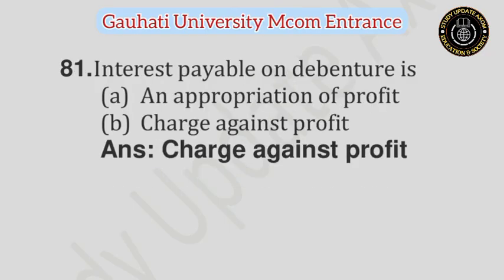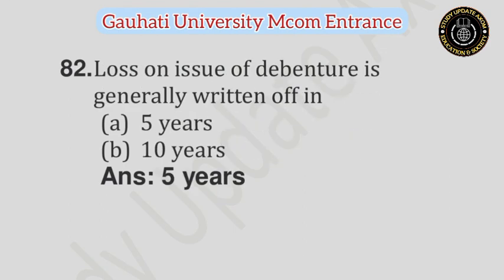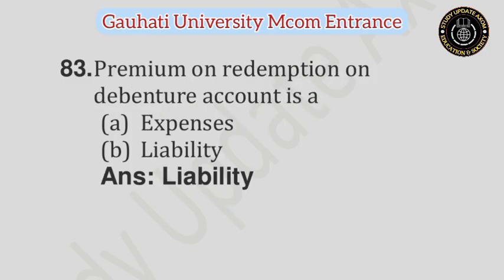Question number 81: Interest payable on debenture is — Option A: An appropriation of profit, Option B: Charge against profit. Answer is Charge against profit. Question number 82: Loss on issue of debenture is generally written off in — Option A: 5 years, Option B: 10 years. Answer is 5 years. Question number 83: Premium on redemption on debenture account is — Option A: Expenses, Option B: Liability. Answer is Liability.